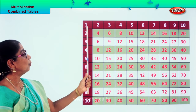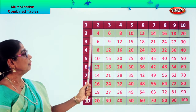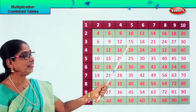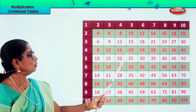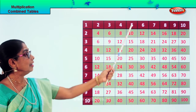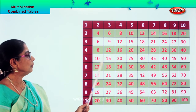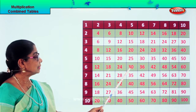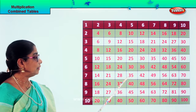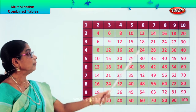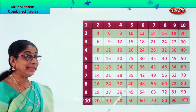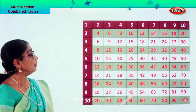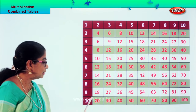Now five ones are five, five twos are ten, five threes are fifteen, five fours are twenty, five fives are twenty-five, five sixes are thirty, five sevens are thirty-five, five eights are forty, five nines are forty-five, five tens are fifty.